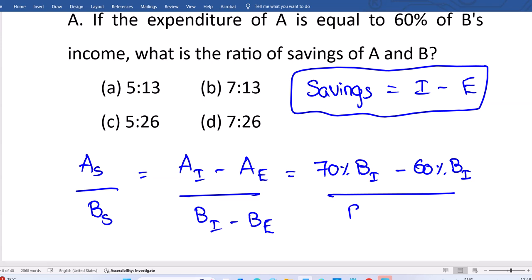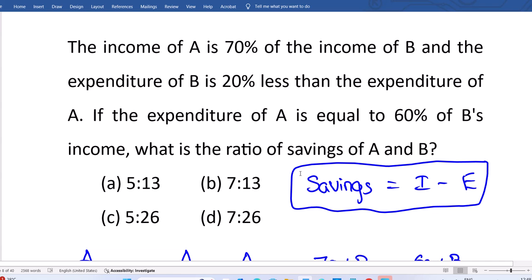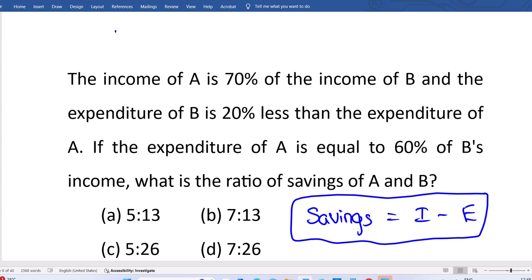Denominator: B income. You have to write B expenses in terms of B income, then all our Bs we can get cancelled and we may get the answer. Now to do that, we have the idea B expenditure is equal to 20% less than expenditure of A. Now here, B expenditure or expenses is 20% less than A means 80% of A expenses. B is 80% of A expenses. Are you clear with it? Why 80? Right. And we know A expenses is 60% of B income.